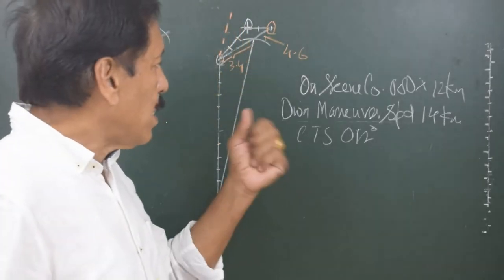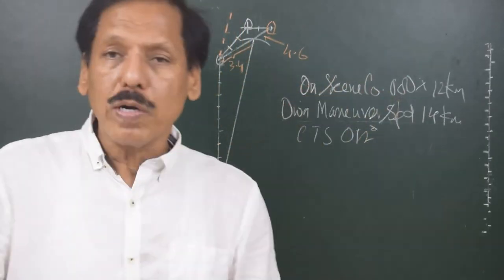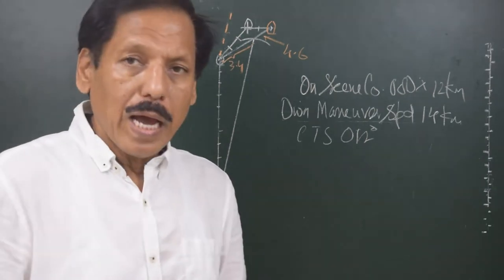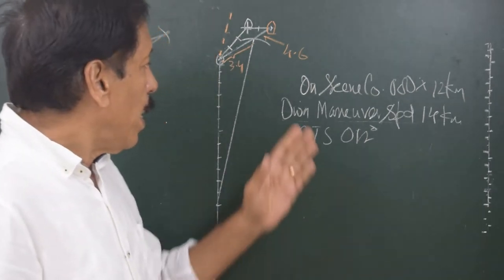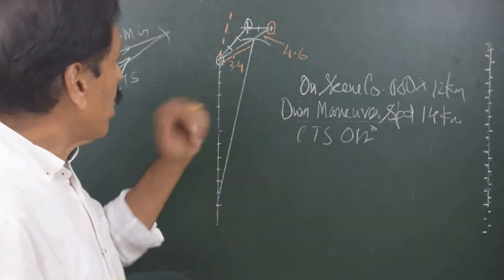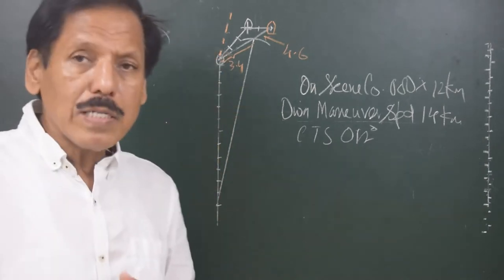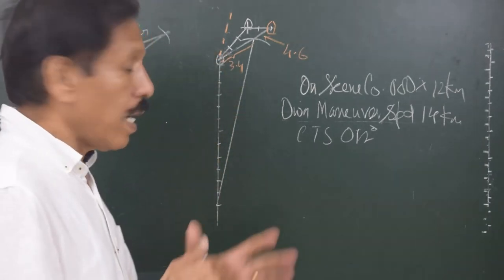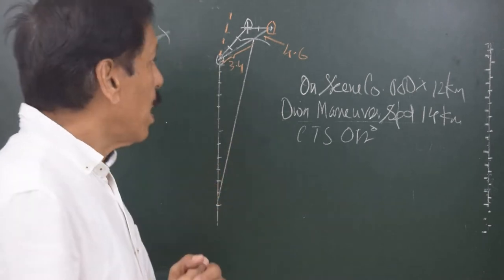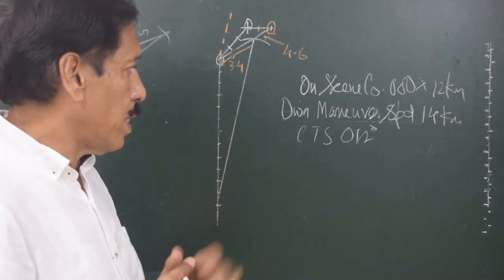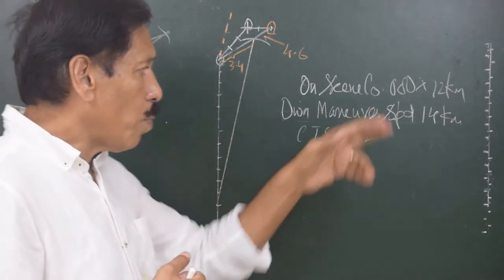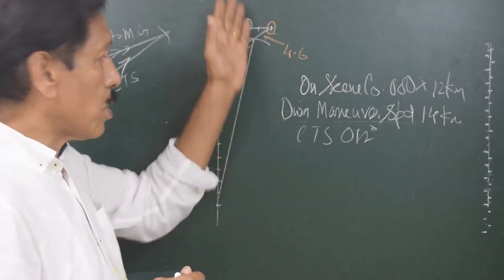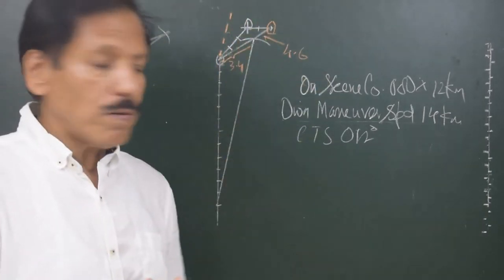Summarizing the question: the on-scene coordinator's course is 000 and speed is 12 knots. My position is 3 miles on the port quarter of the on-scene coordinator. I need to reach 2 miles on the starboard beam of the on-scene coordinator. My own maneuver speed can be 14 knots; otherwise I was going at 12 knots along with the on-scene coordinator.